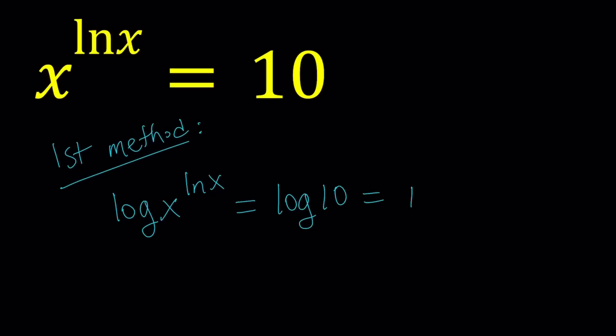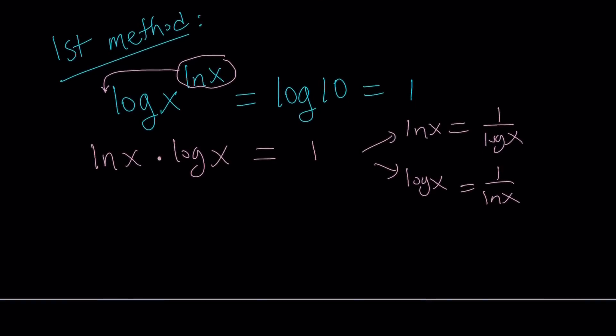Using properties of logarithms, we can move this to the front. And that's going to give us an interesting result: ln x times log x equals 1. I could probably isolate one of them and write ln x as 1 over log x, or write log x as 1 over ln x. But that doesn't really help, does it? The problem is these two logs have different bases.